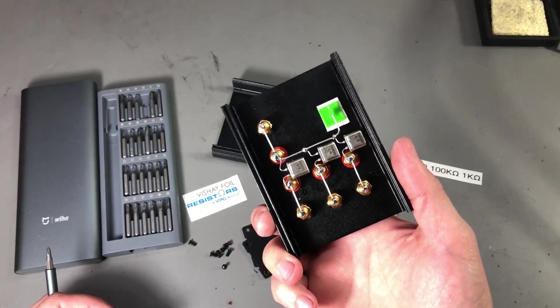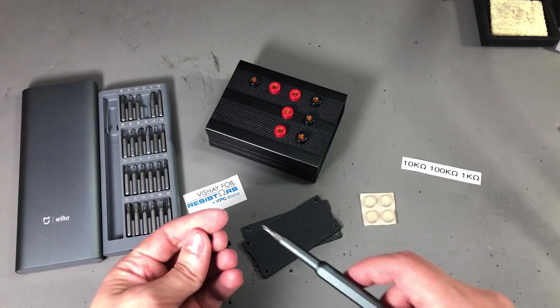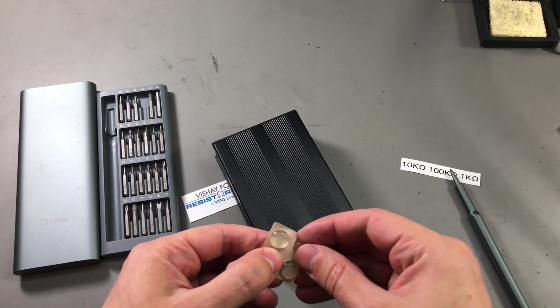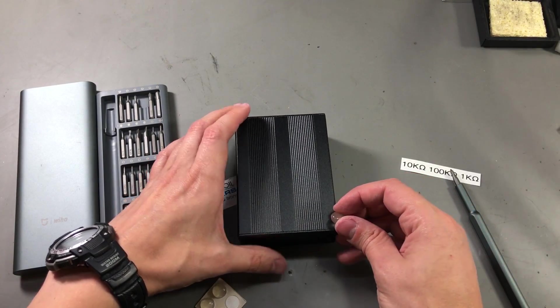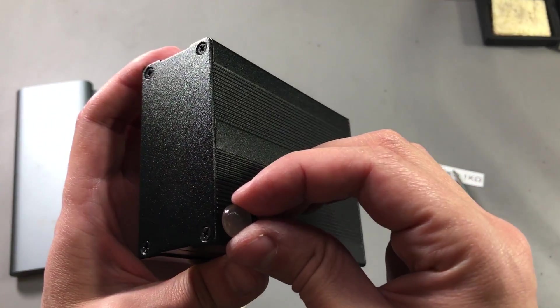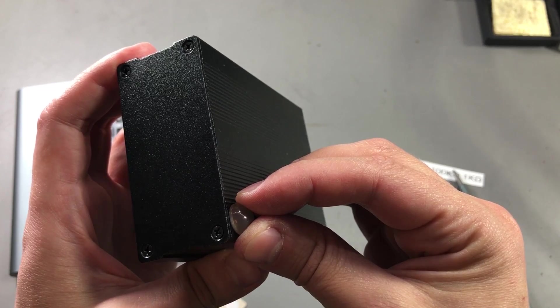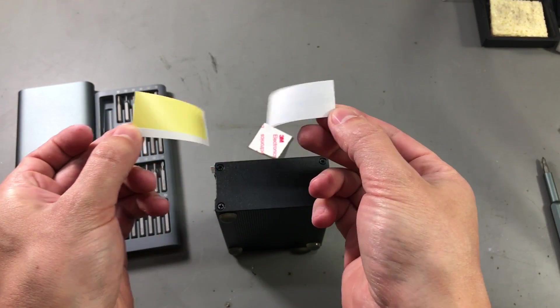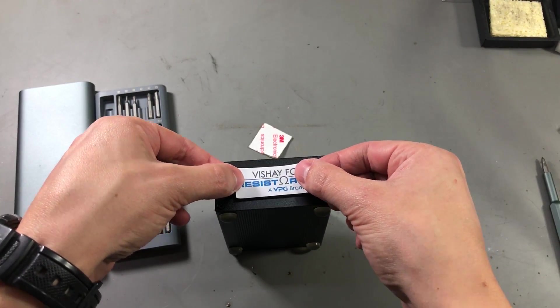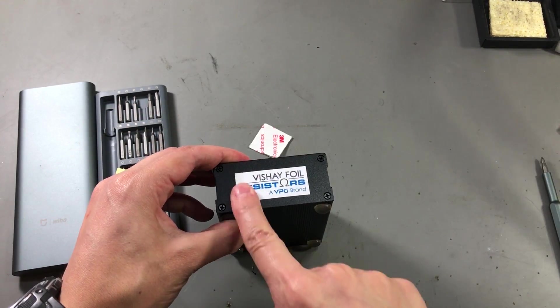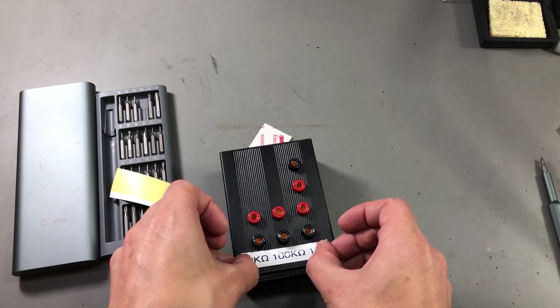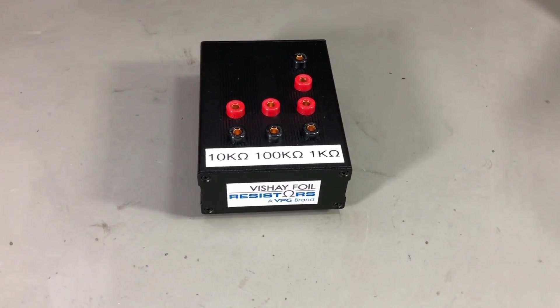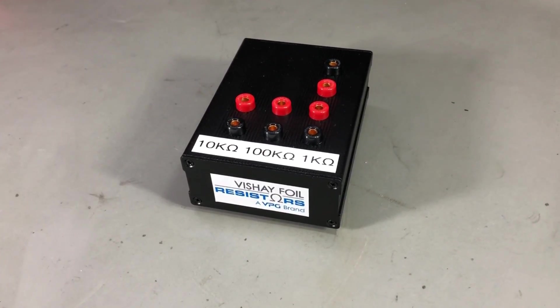And now to complete the assembly, there are a few screws that I need to insert. I will add some of these silicone rubber bumpers on the back. I have also prepared a couple of stickers. So this is the end result. I think my resistor reference box turned out quite okay. It was a nice build. And it will be used in future videos for sure.